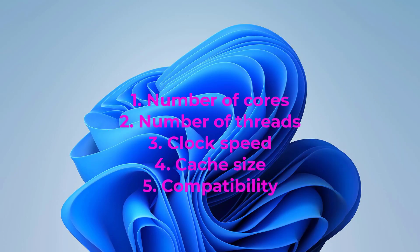When comparing different CPUs, consider the following factors. First, the number of cores — more cores generally mean better multitasking and improved performance for demanding applications. Second, the number of threads — more threads can lead to increased efficiency, especially when using applications that can take advantage of multiple threads. Third, the clock speed — a higher clock speed usually results in faster performance, but also consider power consumption and heat generation. Fourth, the cache size — larger cache sizes can improve CPU performance by reducing the time it takes to access frequently used data.